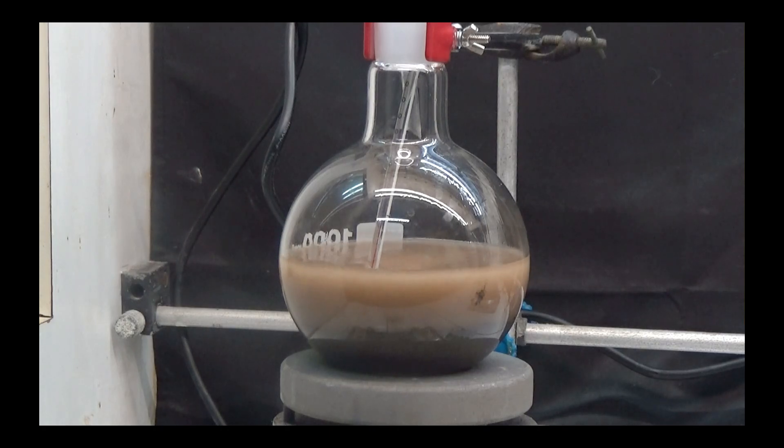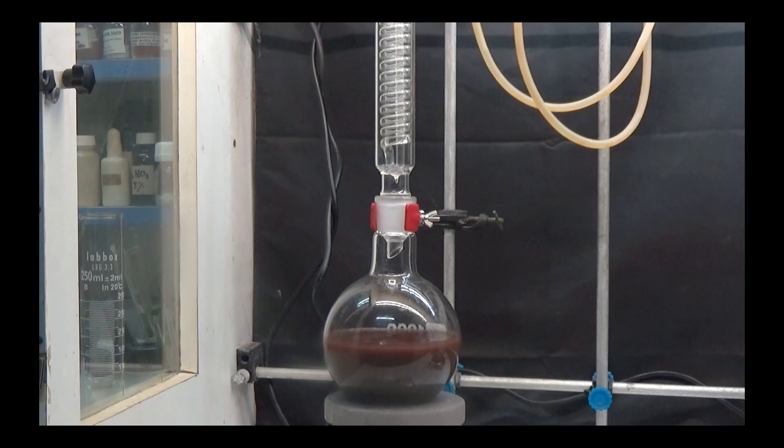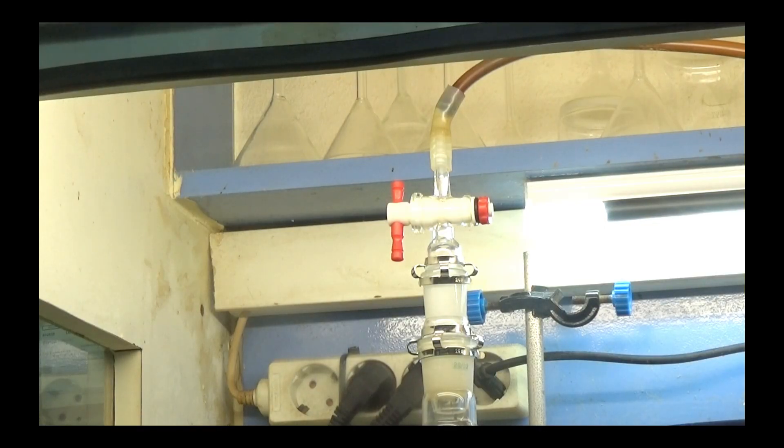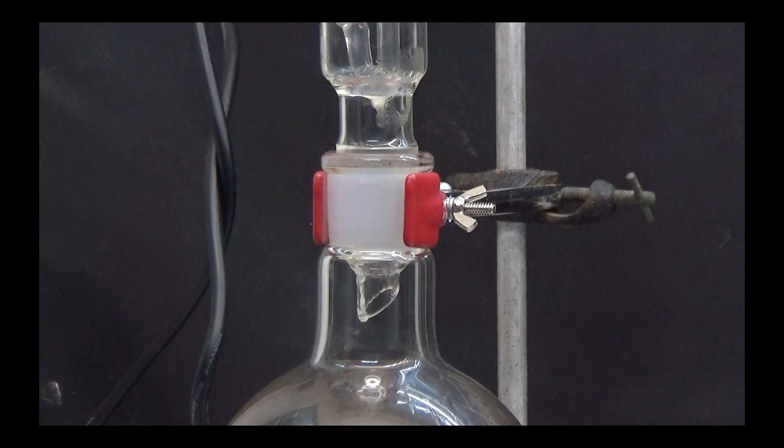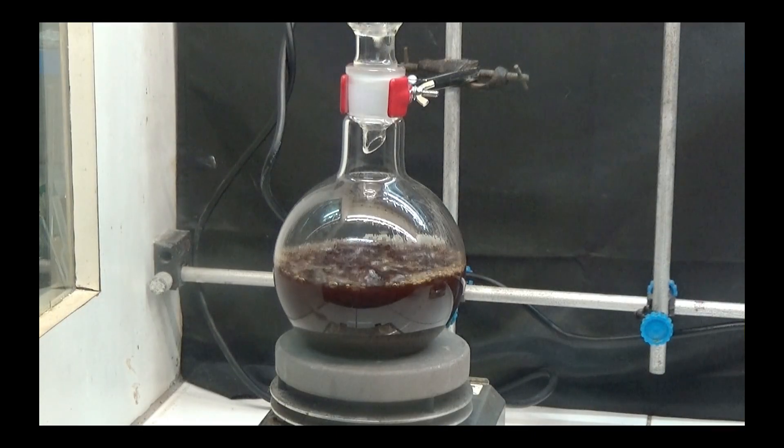We observe that upon completion of the addition of iron, the color of the reaction is brown. Heat at reflux for a duration of seven hours. Make sure the fume hood is connected to the condenser outlet. After seven hours of reflux, the color of the mixture has a red hue.